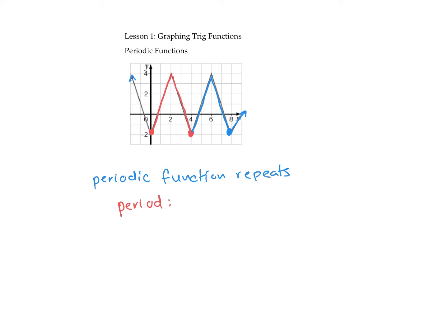The period is the amount of units it takes to repeat. Looking at the red segment, it started at zero on the x-axis and ended at four, so the period is four units. The blue segment starts at four and ends at eight, so it also repeats in four. So the cycle or period repeats every four units. The maximum value of the function is four.